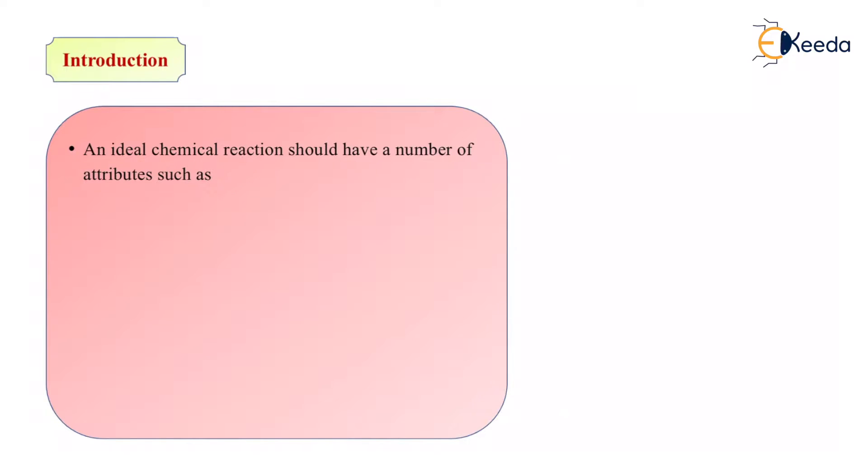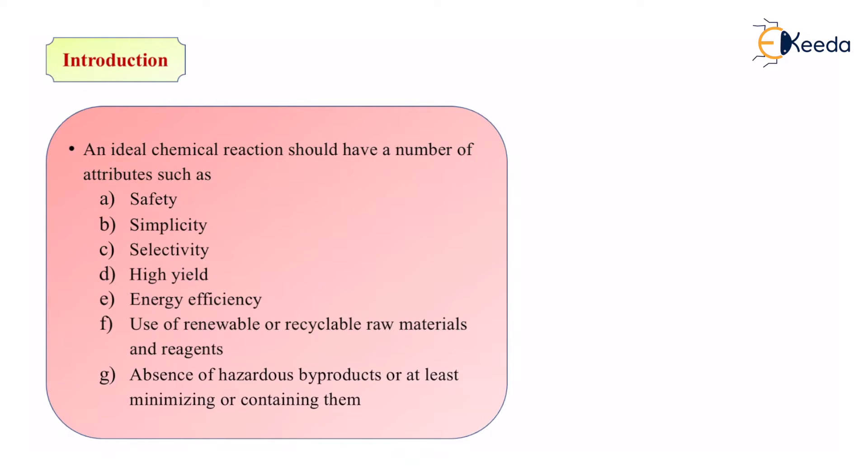An ideal chemical reaction should have a number of attributes such as safety, simplicity, selectivity, high yield, energy efficiency, use of renewable or recyclable raw materials and reagents, and absence of hazardous byproducts or at least minimizing or containing them.